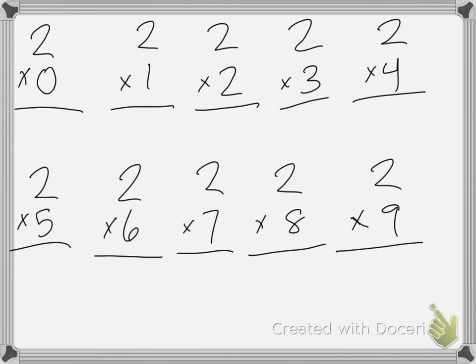We can also write multiplication problems like this. When we read these problems, the first one would be 2 groups of 0 pennies would be 0.